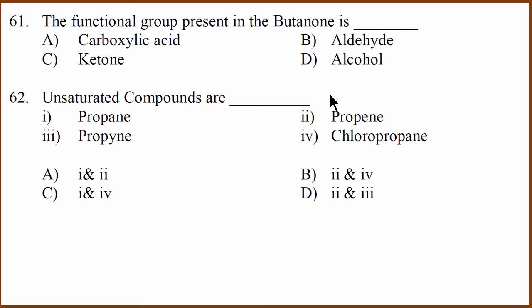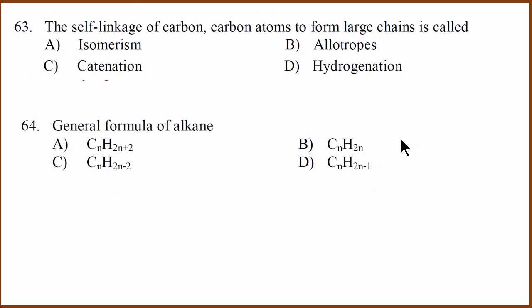Now we have organic chemistry question. Carbon question. Butanone happens to be ketone. Butanone is the ketone family, fourth member of the ketone family. Unsaturated compounds. Propene and propyne, they are unsaturated compound. Propane and chloropropane, they are not. So correct answer is two and three. The self-linkage of carbon atoms to form large chains, what do we call that? We call that catenation. It's called catenation. What is the general formula of alkane? Alkane general formula is CnH2n plus 2. This is the alkane formula, this is the alkene formula, this is the alkyne formula.